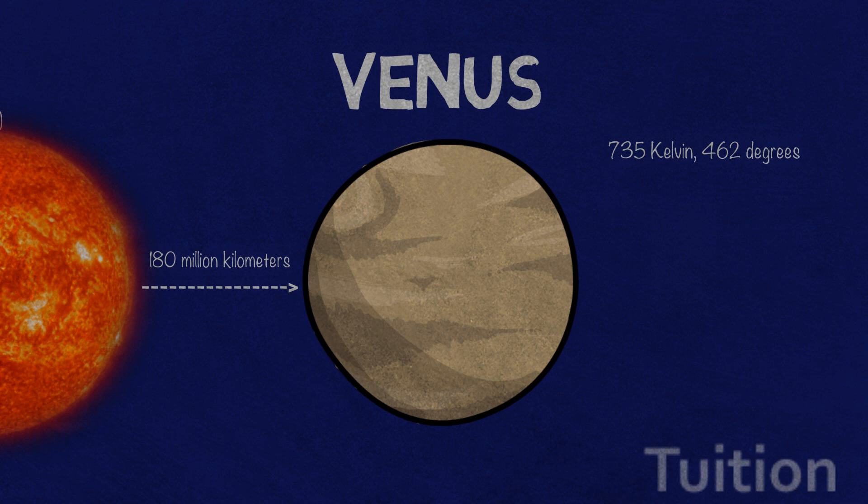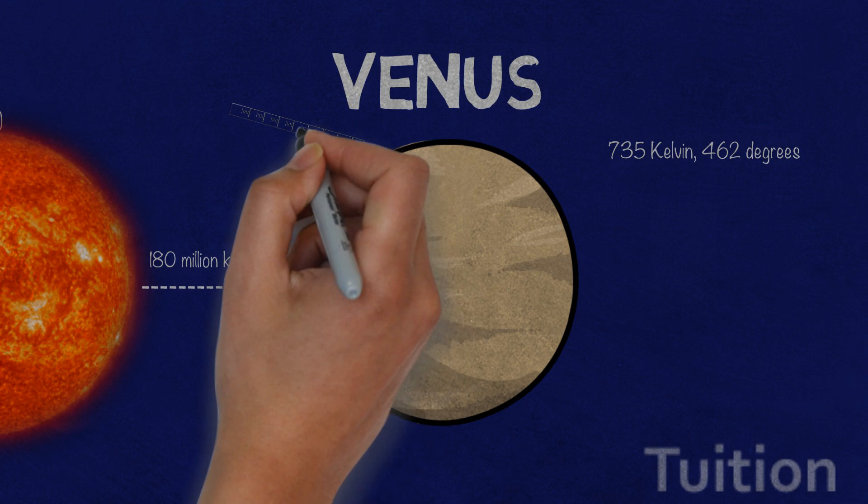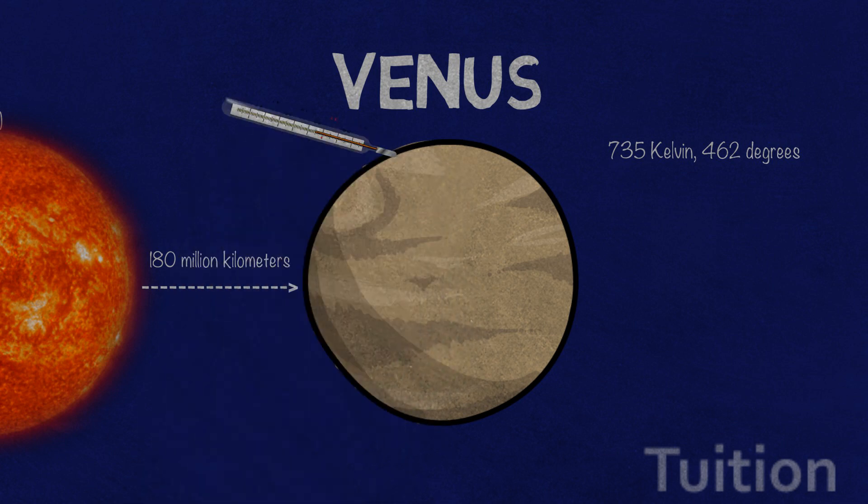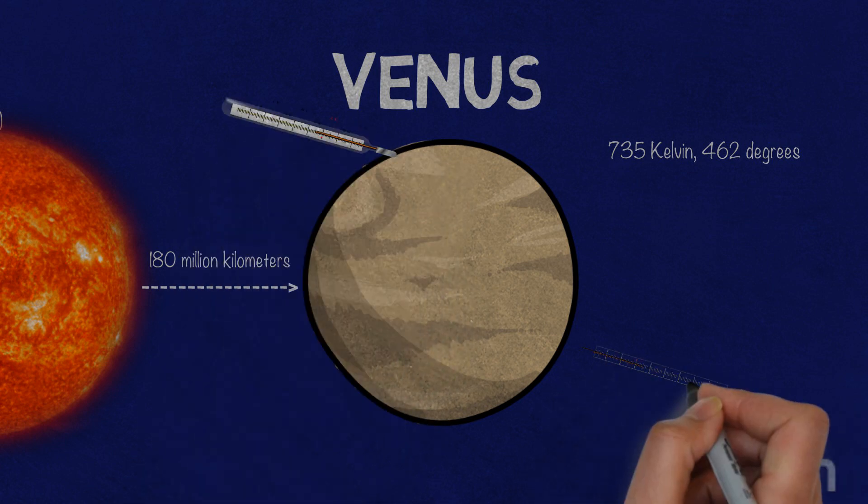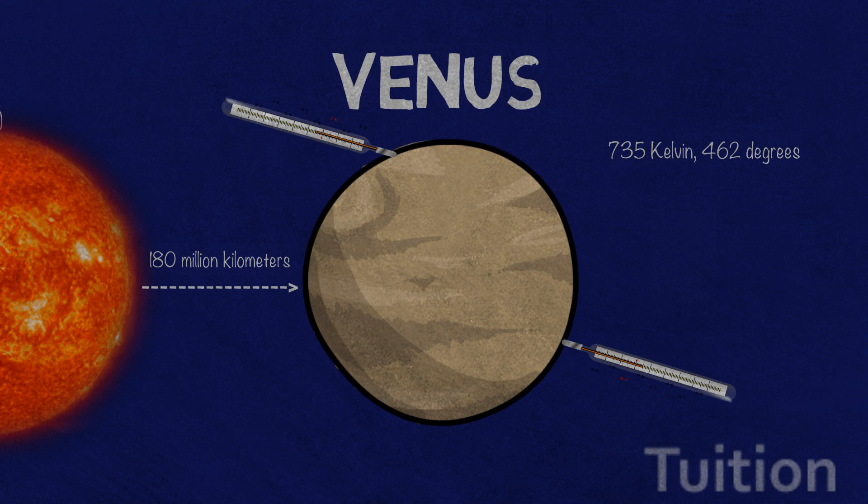Hot enough to melt lead. Venus remains at the same temperature no matter where you stand on the planet. At the North Pole, 735 Kelvin. At night, 735 Kelvin. Daytime at equator, 735 Kelvin. You get the point.